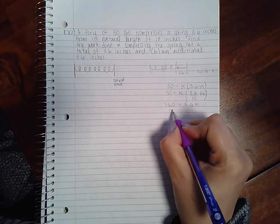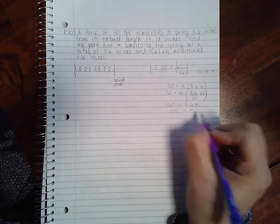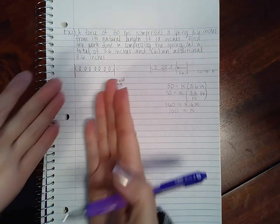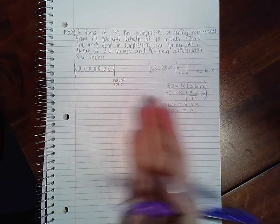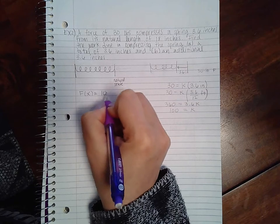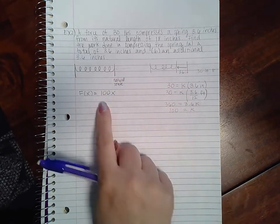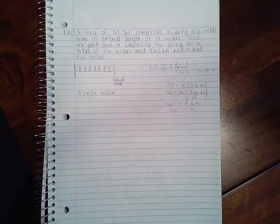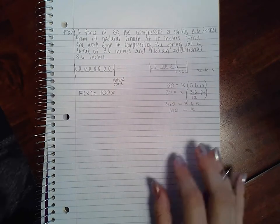And if I divide by 3.6 on both sides, I get that k is 100. So for this particular spring, we know that F of x is going to equal 100x—that constant of proportionality for this particular spring.